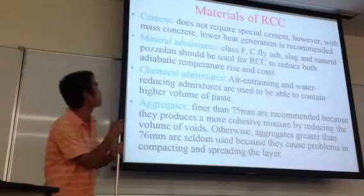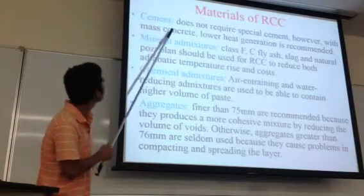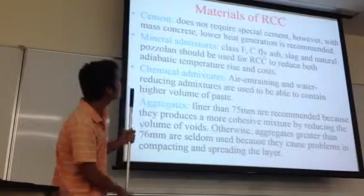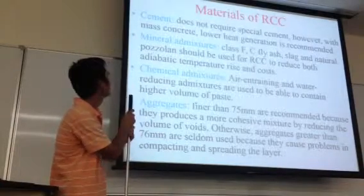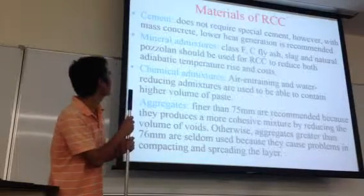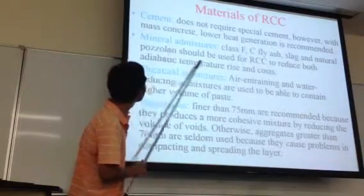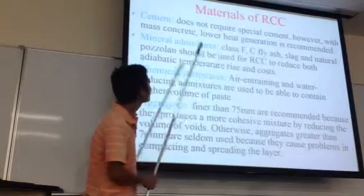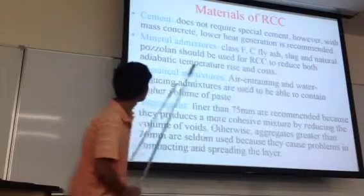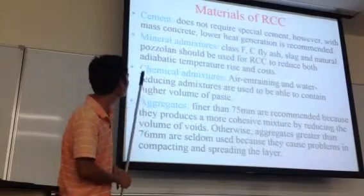Materials of RCC. First, I would like to say about the cement. Cement doesn't require special types. However, with mass concrete, low heat generation is recommended. Mineral admixtures — Class F and Class C fly ash or natural pozzolan — should be used for RCC. Chemical admixtures such as air-entraining and water-reducing admixtures are used to maintain high-volume paste.